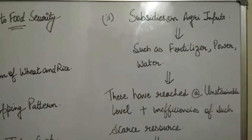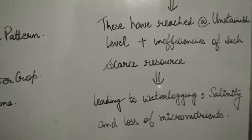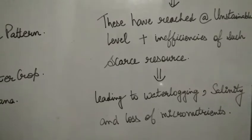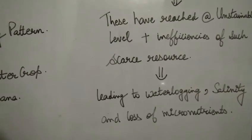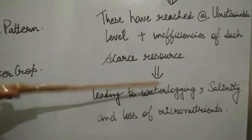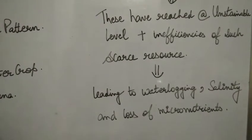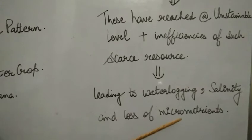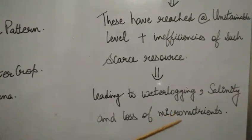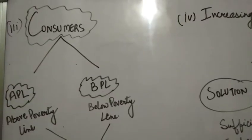Rather than resources reaching those who actually need them, misuse is happening. This unsustainable use of subsidies is causing serious problems in agriculture: water logging, salinity — where the salt content of the soil increases — and loss of micronutrients from the soil, all leading to soil degradation. So the overuse of subsidies is causing major problems like water logging, salinity, and loss of micronutrients, ultimately leading to land degradation.